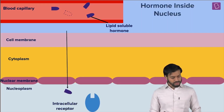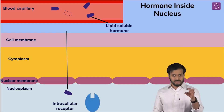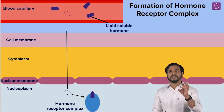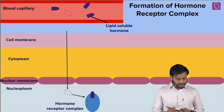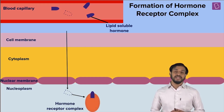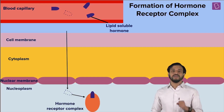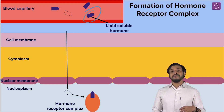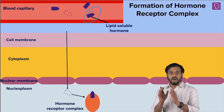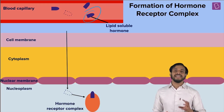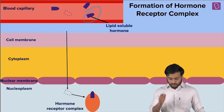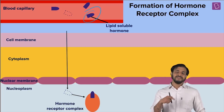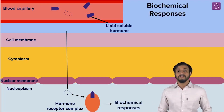The hormone crosses the nuclear membrane and reaches inside the nucleus where the intracellular receptors are present. Binding happens, forming the hormone-receptor complex. This results in a change — specifically, activating the receptor proteins. So the hormones cross the membrane, go intracellular, bind to the receptors, and the receptor-hormone complex changes the proteins from inactive to active form.